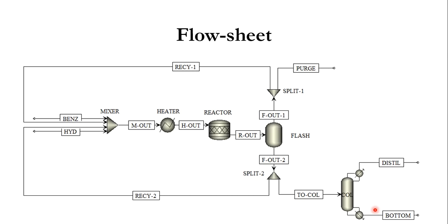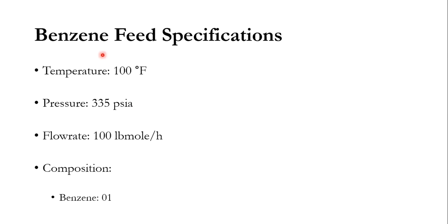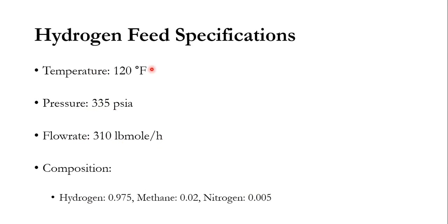We will simulate this flow sheet in two ways: number one, without recycle, and number two, with recycle. The feed specifications for benzene are: temperature 100°F, pressure 335 PSIA, flow rate 100 pound-mole per hour, composition benzene = 1. For hydrogen: temperature 120°F, pressure 335 PSIA, flow rate 310 pound-mole per hour, with composition hydrogen 0.975, methane 0.02, and nitrogen 0.005.